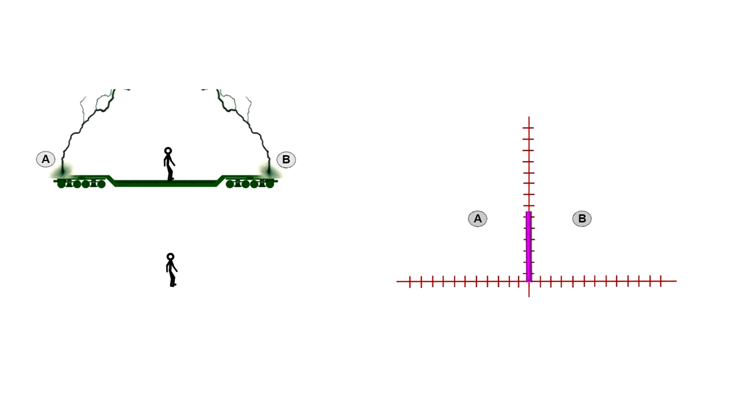To help see how this works, we'll take another look at the lightning strike for the person on the train and the person on the ground that we used in our segment on special relativity. Only this time, we'll map the events to our spacetime graph. The world line for the person standing on the ground is shown in purple. We'll label the lightning strikes A and B and place the two events on the spacetime graph with A to the left of the person on the ground and B to the right. The plane containing A and B contains all the points that are simultaneous for the person on the ground at the time of the two strikes. We call this the simultaneity plane.